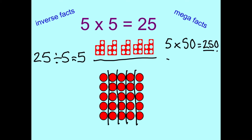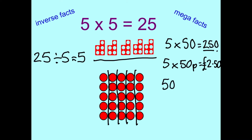Let's do it as if it was money. If you've got 5 50ps you'd have £2.50, which is the same as 250 pennies. If you had 50 times 5 — so 5 50ps — you'd have 250 pence or £2.50 again.